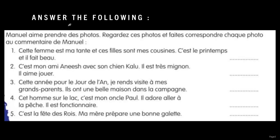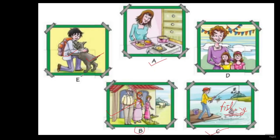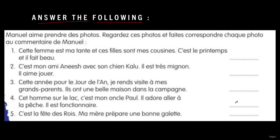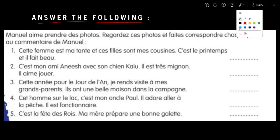Now here there are some questions which are asked to you. You are supposed to answer those questions and give the alphabet — like A, B, C, D, or E — whatever the alphabet is, you have to just put it over these blanks. So let's see what will come in which blank.